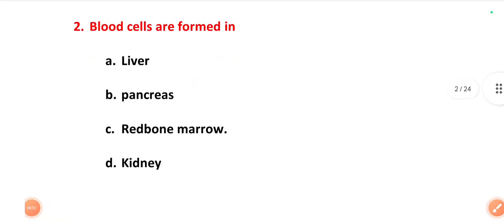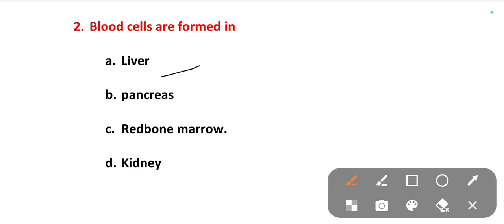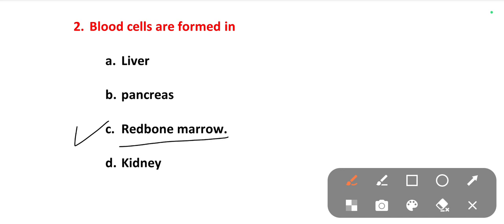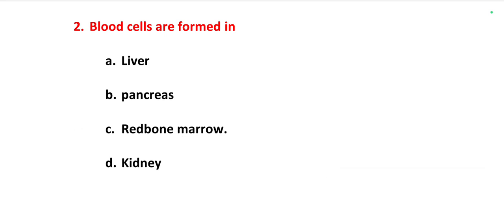The next question is: blood cells are formed in. Options are liver, pancreas, red bone marrow, kidney. The right answer is option C, red bone marrow. The RBC production is mainly taking place in the red bone marrow.